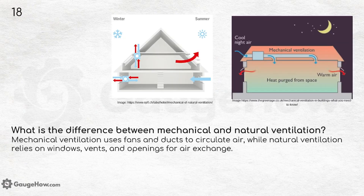What is the difference between mechanical and natural ventilation? Mechanical ventilation uses fans and ducts to circulate air — as can be seen in theaters. Natural ventilation relies on windows, vents and openings for air exchange, and can be seen in open ground settings.